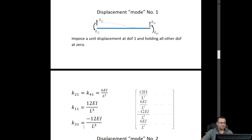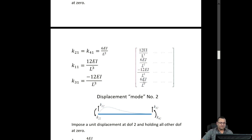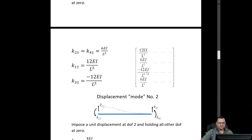Using summation of Fy equal to 0, we find K31 equals minus 12EI over L cubed. So for the first mode, which represents the first column in the beam stiffness matrix: 12EI over L cubed, 6EI over L squared, minus 12EI over L cubed, 6EI over L squared.